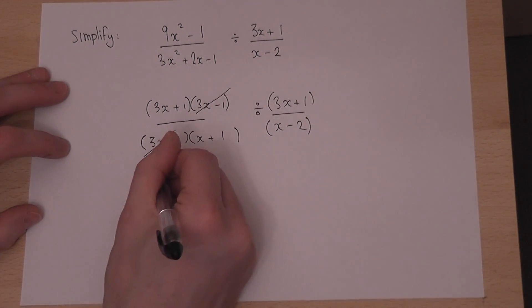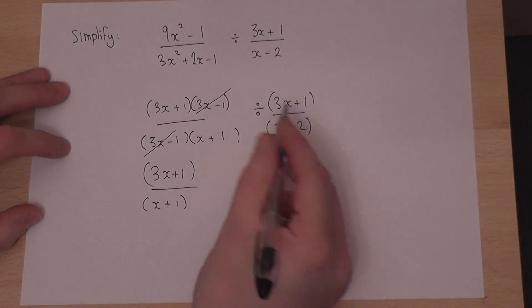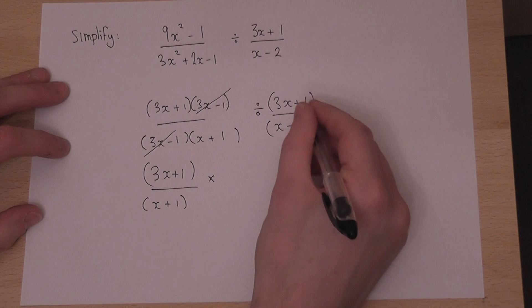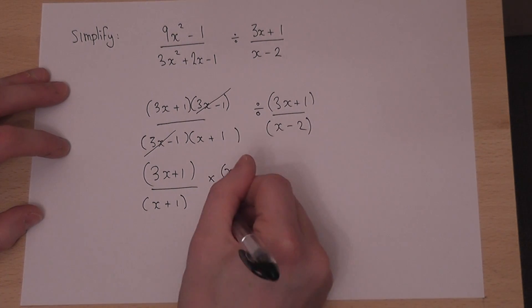So I'm left with 3x plus 1 all over x plus 1. And when you divide by a fraction, we change it to times and flip the second fraction over, which is called the reciprocal.